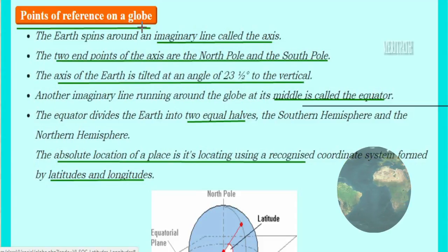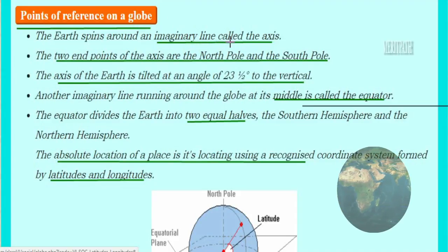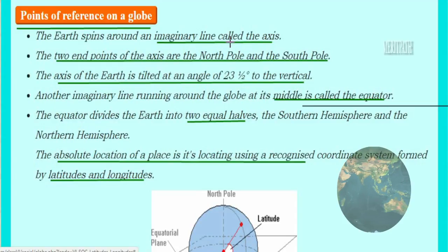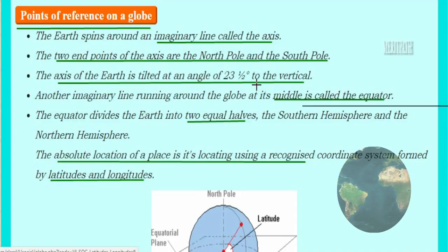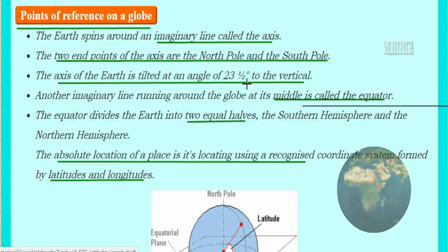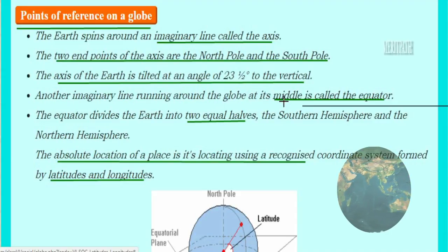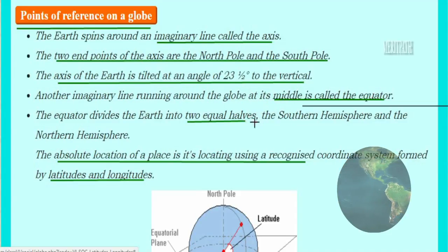There are points of reference on a globe. The globe spins on an imaginary axis — an imaginary line. We have earlier studied that the earth rotates around itself. The earth spins around an imaginary line known as the axis, and this axis has two ends called the north pole and the south pole. This axis line is always tilted at an angle of 23 and a half degrees towards the vertical.